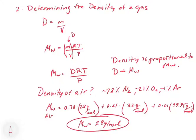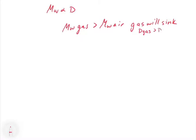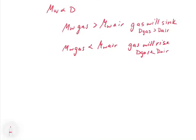This is important to keep in mind. Since molecular weight is proportional to density, if a gas has a molecular weight greater than air (greater than ~29 g/mol), that gas is going to sink, because its density is greater than the density of air. Conversely, if a gas has a molecular weight less than air, the gas will rise, and its density will be less than that of air.